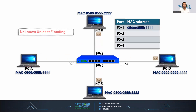Now it will perform the unknown unicast flooding. What does it mean? It means the switch makes a copy of the frame and it will forward that frame on all its active interfaces, except the one interface where the frame was received. So this process is called the unknown unicast flooding.